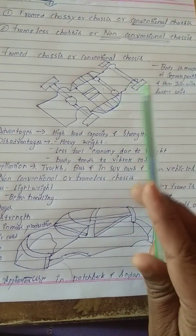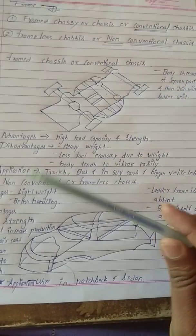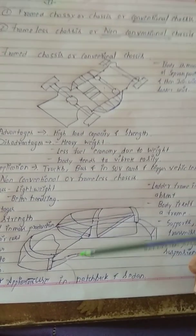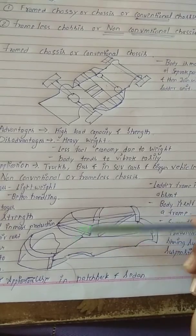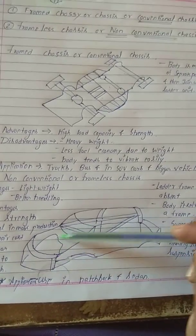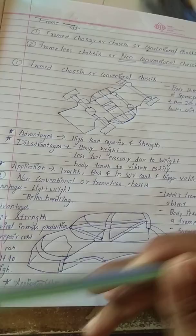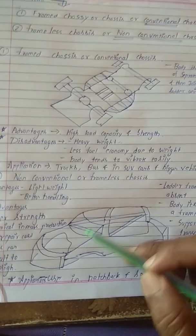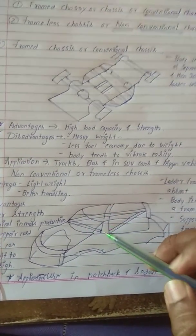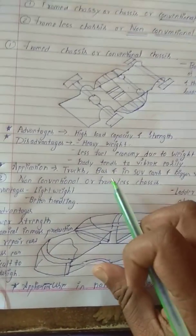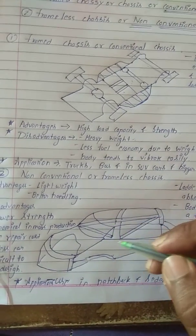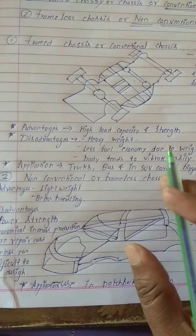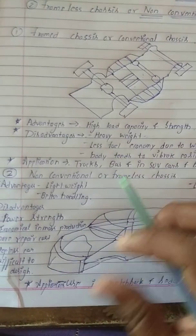So, as in frame chassis you need to separately join other body parts, here you don't need that. You just need to attach the various parts to this frame only. In this case, the vibration will be less because the whole unit is one only — there are no separate joints.